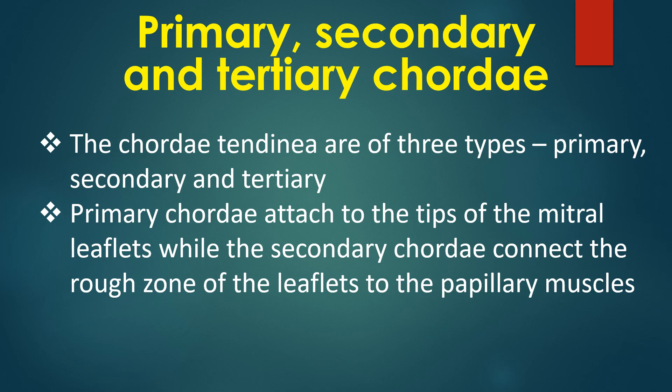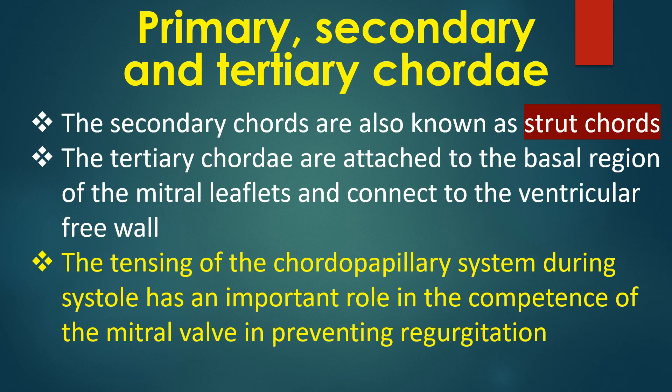The chordae tendineae are of three types: primary, secondary and tertiary. Primary chordae attach to the tips of the mitral leaflets, while the secondary chordae connect the rough zone of the leaflets to the papillary muscles — also known as strut chordae. The tertiary chordae are attached to the basal region of the mitral leaflets and connect to the ventricular free wall. The tensing of the chordopapillary system during systole has an important role in the competence of the mitral valve in preventing regurgitation.